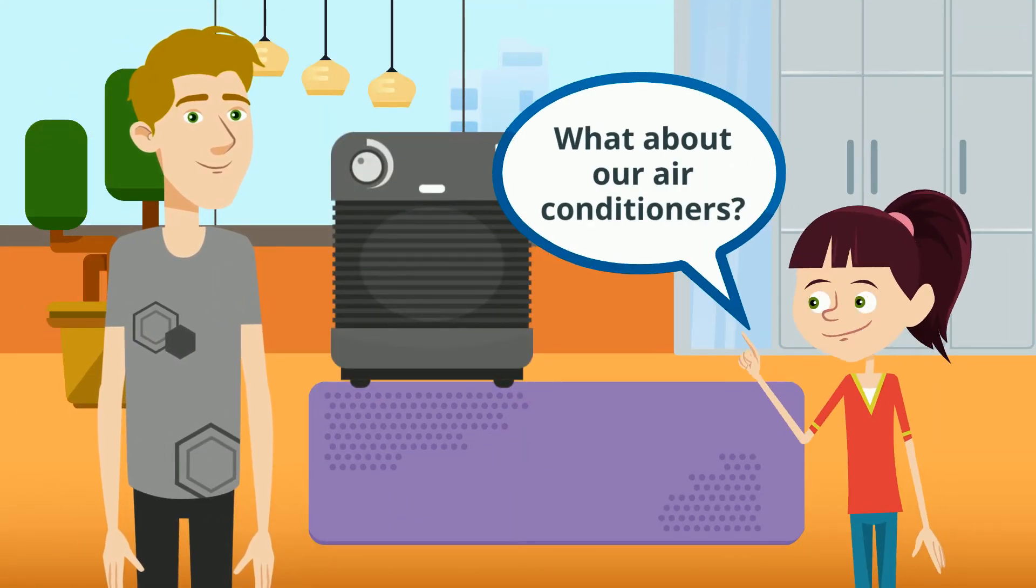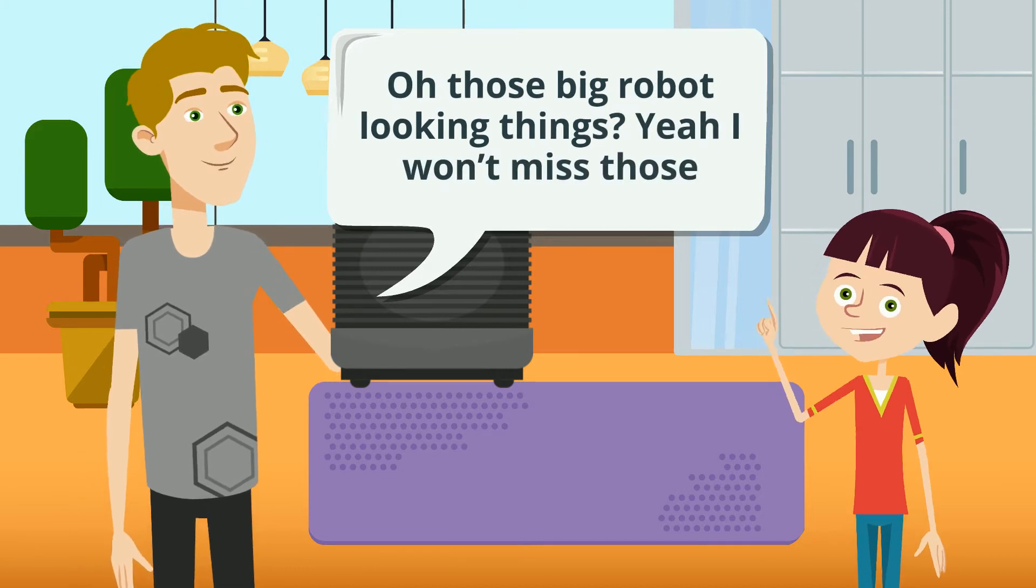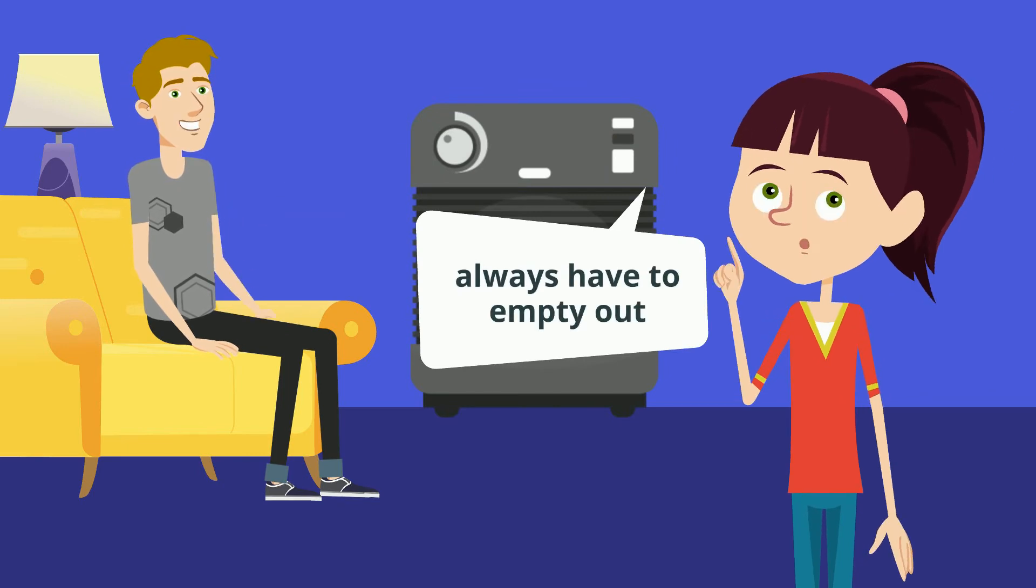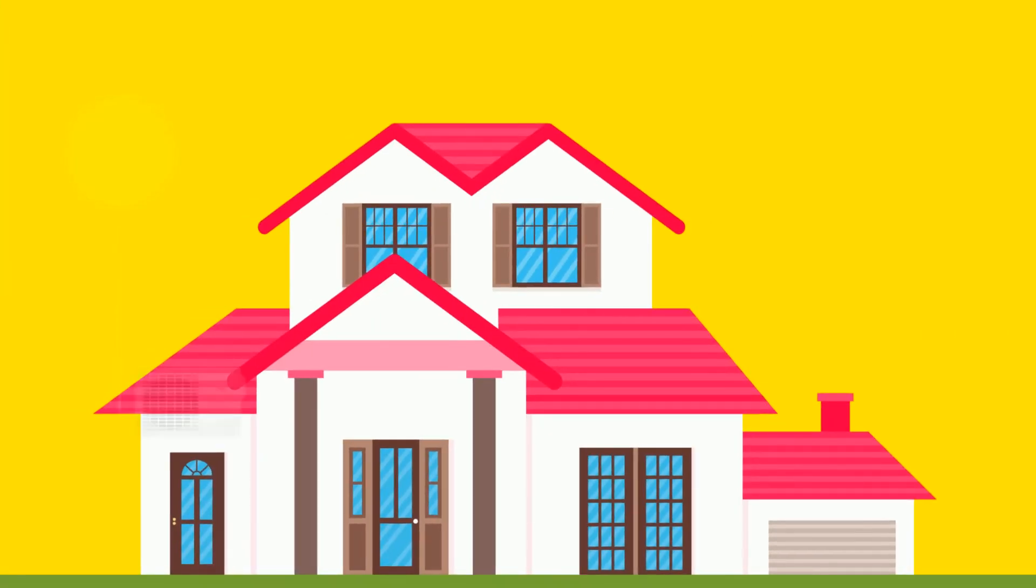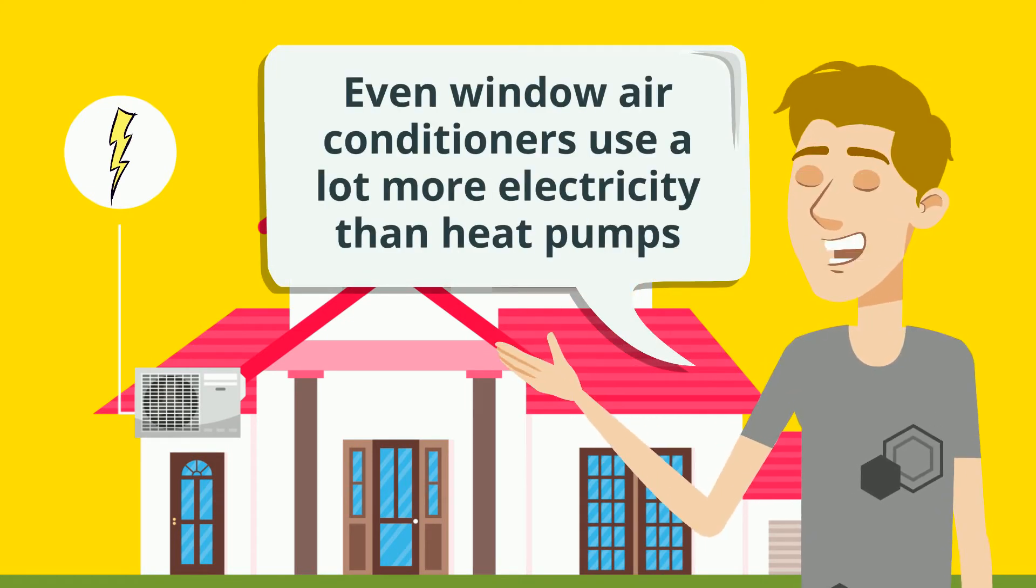What about our air conditioners? Oh, those big robot-looking things? Yeah, I won't miss those. I can never figure out which hose goes to which, and they're such a pain to lug around and always have to empty out. Plus, they use a ton of electricity. Even window air conditioners use a lot more electricity than heat pumps.